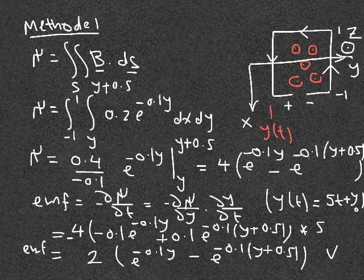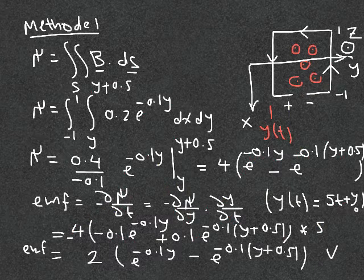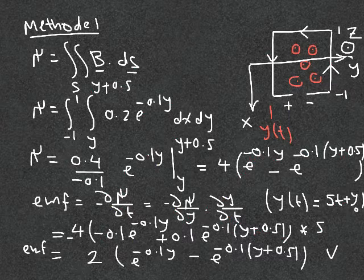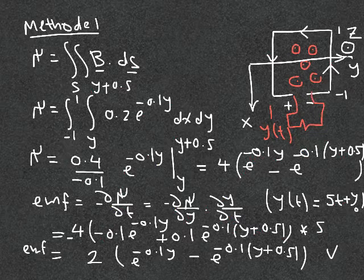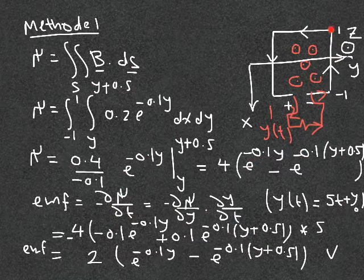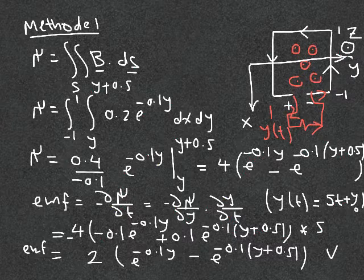Multiplying 5 by minus 4 gives minus 2, which we bring inside the bracket, arriving at the EMF expression in volts. The EMF is positive because the flux is decreasing. By Lenz's law, connecting the resistance between the two terminals means current must flow in the direction that creates a counterclockwise current, generating a magnetic field out of the page to oppose the weakening flux.